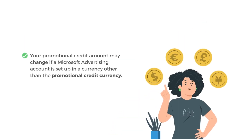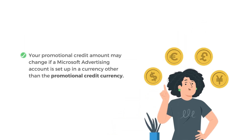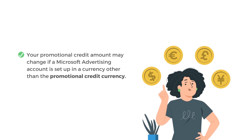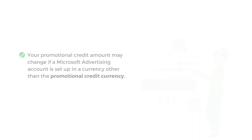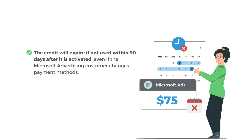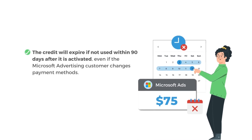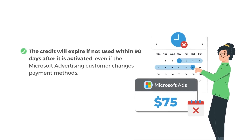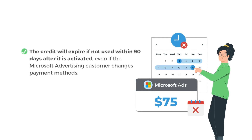Your promotional credit amount may change if your Microsoft Advertising account is set up in a currency other than the promotional credit currency. The credit will expire if it's not used within 90 days after it's activated, even if the Microsoft Advertising customer changes payment methods.